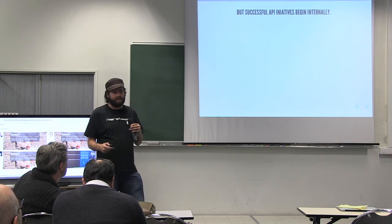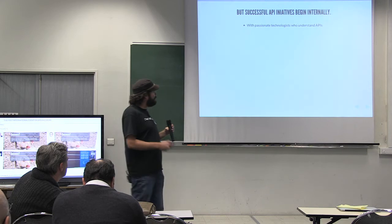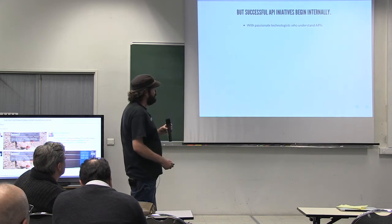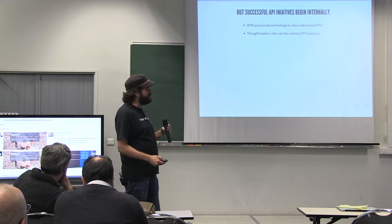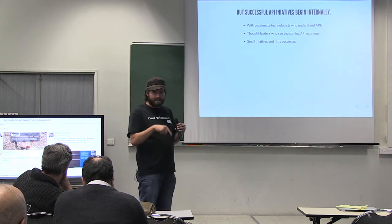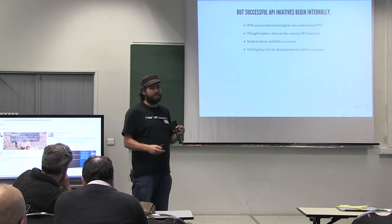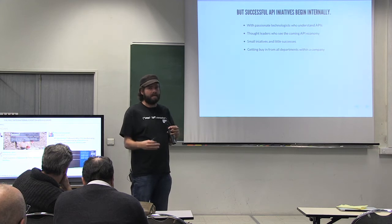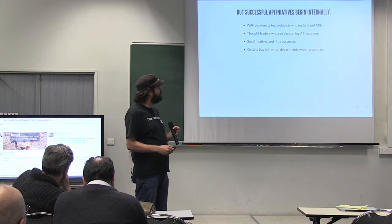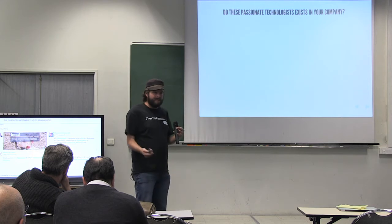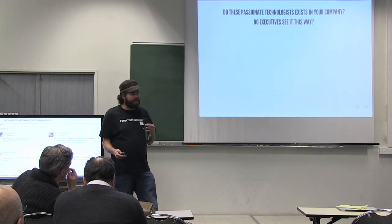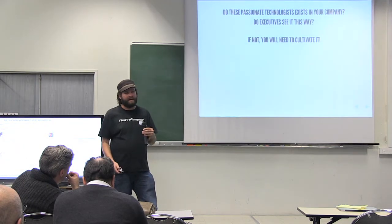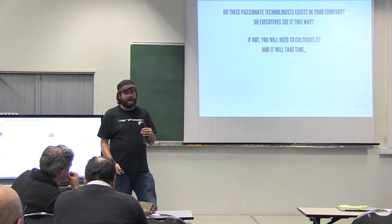And not just with internal APIs, but perspective. So APIs begin internally with passionate technologists who understand APIs. Thought leaders and executives who see the coming API economy. Small initiatives and little successes internally. And getting buy-in from all departments. Not just an IT or developer initiative. You've got to have marketing, business, all the other departments involved. So do these passionate technologists exist in your company? Do the executives see it the way that you see it? If not, you're going to need to cultivate it. And it's not going to be easy. It's going to take a lot of work.